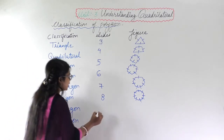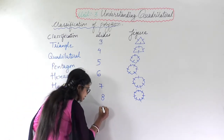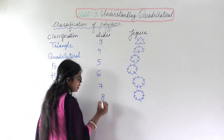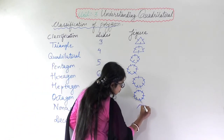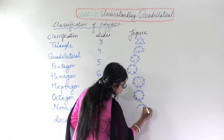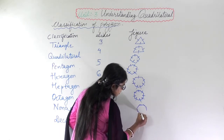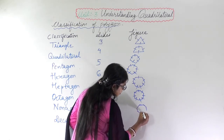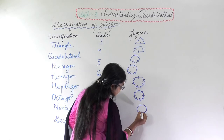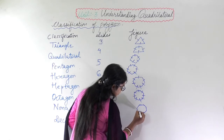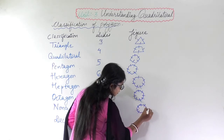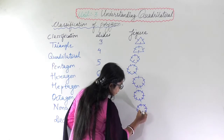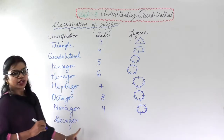Similarly, a nonagon means nine sides — one, two, three, four, five, six, seven, eight, and nine. A nonagon has nine sides.